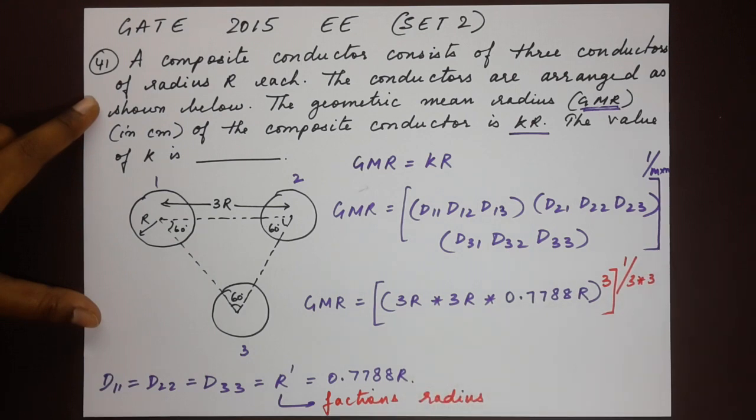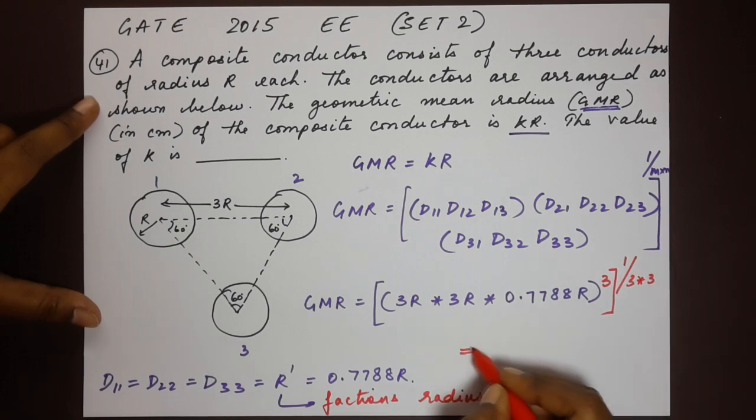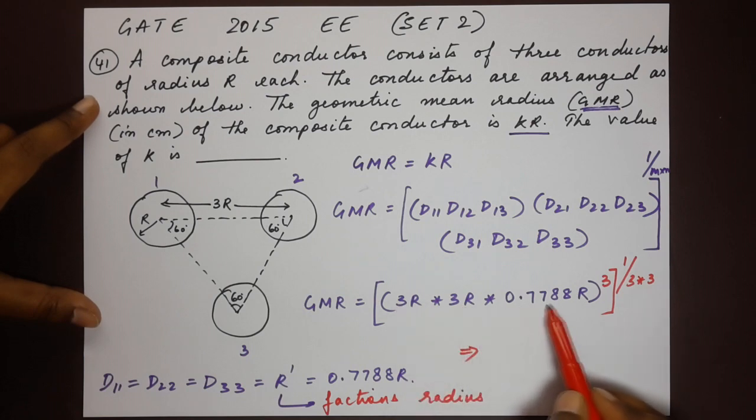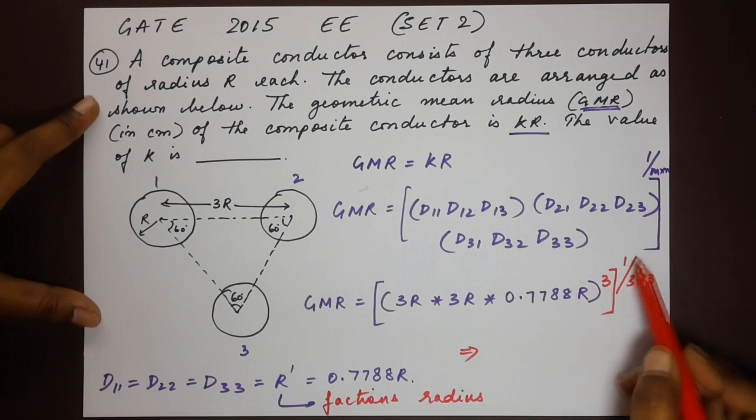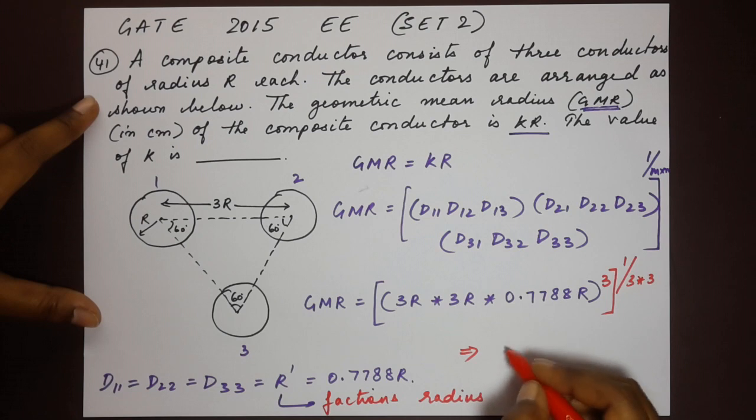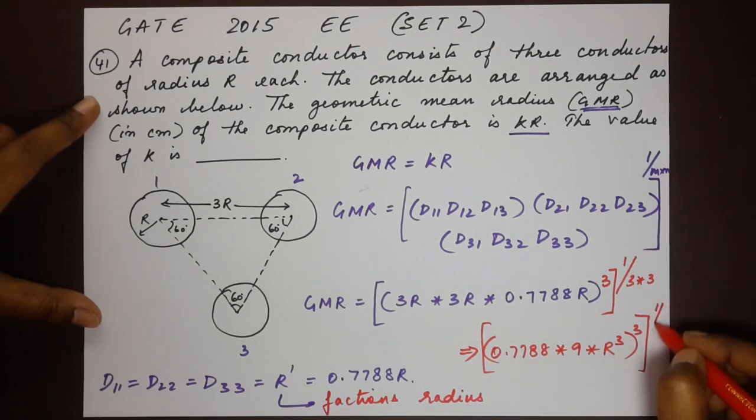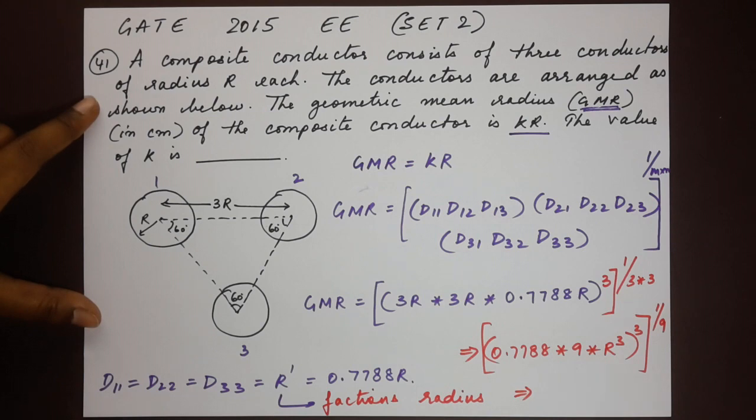Now if you multiply the terms here, we get a value or we'll solve it directly. Say that's 3r into 3r into 0.7788r cubed to the power of 1 by 9. So that's 9th root. Here it's 0.7788r into 9 into r cube, whole cube to the power of 1 by 9. I hope that makes sense so far.